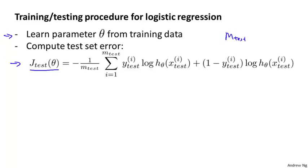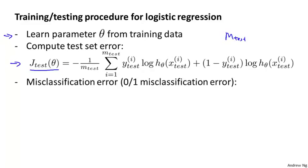While this definition of the test set error j subscript test is perfectly reasonable, sometimes there's an alternative test set metric that might be easier to interpret. And that's the misclassification error. It's also called the zero one misclassification error, with zero one denoting that you either get an example right or you get an example wrong. Here's what I mean.